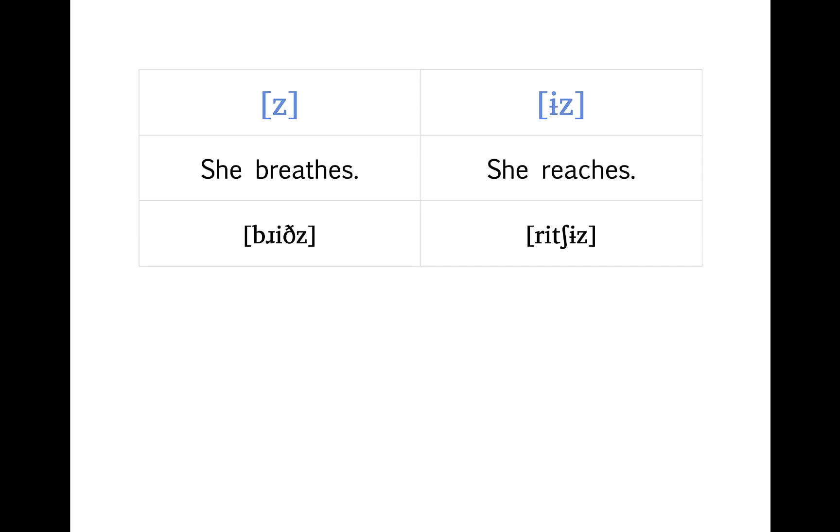Notice that this correctly predicts that we'll also get that extra vowel when we add the simple present suffix to a verb. So breathes just gets [z] for a simple present in 'she breathes.' But reaches, where the verb reach ends with that affricate [tʃ], gets the epenthesized vowel 'reaches.'